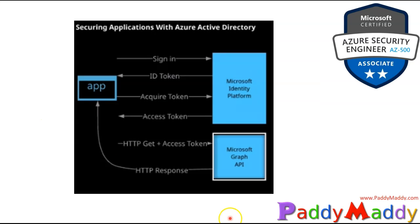OAuth 2.0 allows third-party applications to access web-hosted resources on behalf of the logged-on user. Resources can be divided into a set of permissions called scopes, which split the functionality of resources into smaller chunks. Users and application permissions are used together with scopes to maintain fine-grained control of resources, as well as safeguarding third-party API exposure.